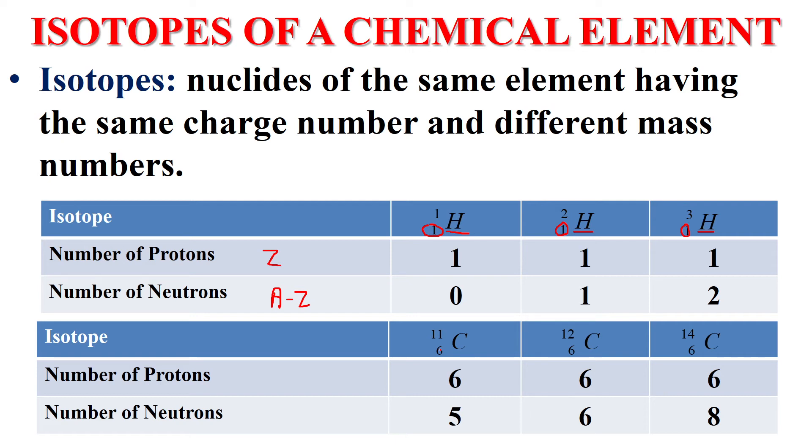Here, all of them have 6 protons. This is 11-6=5. C-6-12. All of them have 6 protons. This is 5 neutrons, 6 neutrons, and this is 8 neutrons.